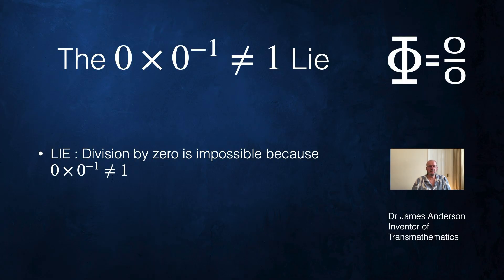Now this is a true statement, zero times zero to the power minus one is not equal to one, but it doesn't stop you from dividing by zero. The people who present such proofs are mistaken. Now the proofs are very deceptive, they're very seductive and persuade a lot of people that division by zero is impossible.